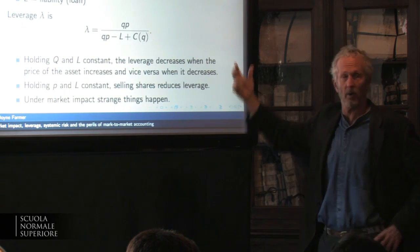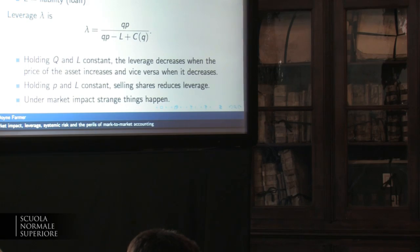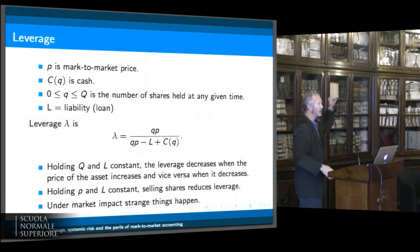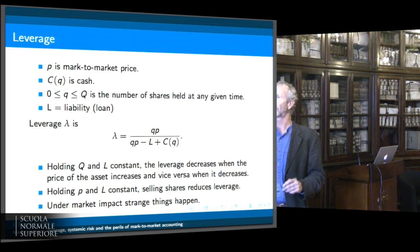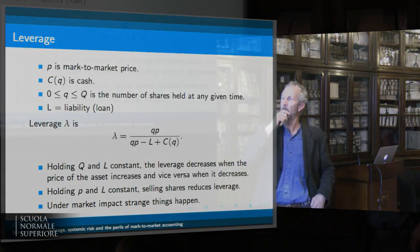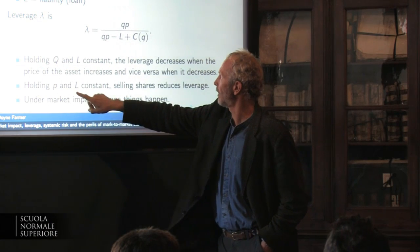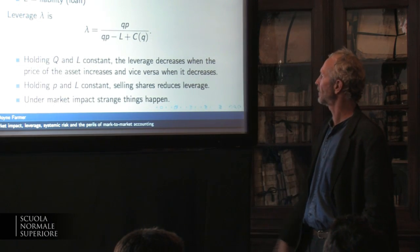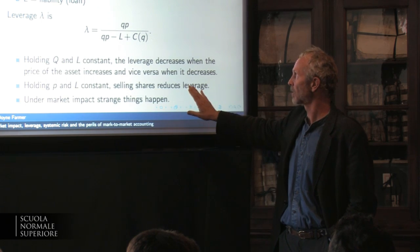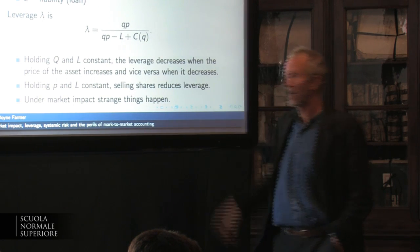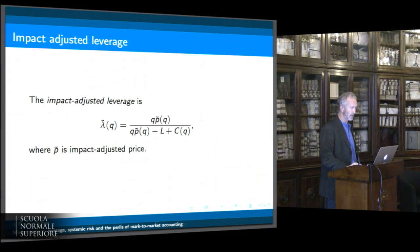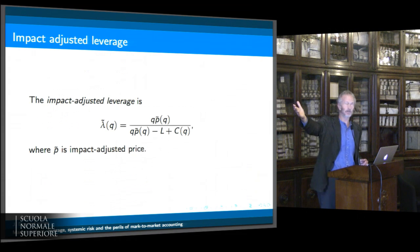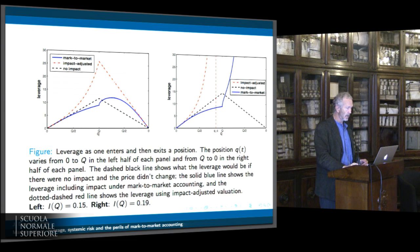If prices go down, your leverage goes up. If you hold prices constant and you hold the size of the money you borrow constant, then selling shares is going to reduce leverage as you raise cash. Now I'm going to show you that with market impact, strange things happen to this formula. We can alternatively have an impact-adjusted version of this where we write down exactly the same formula but put in an impact-adjusted price P-tilde.